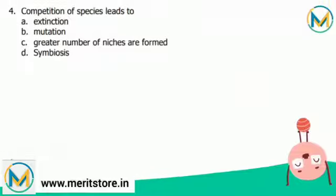Next question: competition between species leads to — extinction, mutation, a greater number of niches being formed, or symbiosis? Competition is an interaction between organisms or species in which both are harmed. The limited supply of at least one resource such as food, water, or territory used by both can be a factor. The specific area where no organisms inhabit is called a niche.